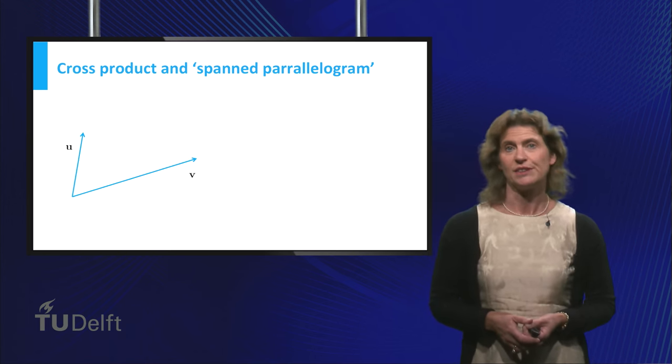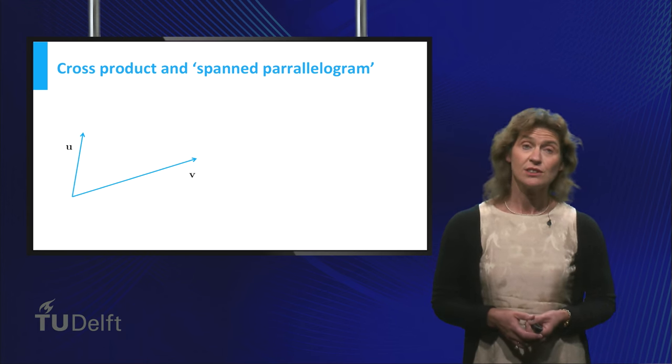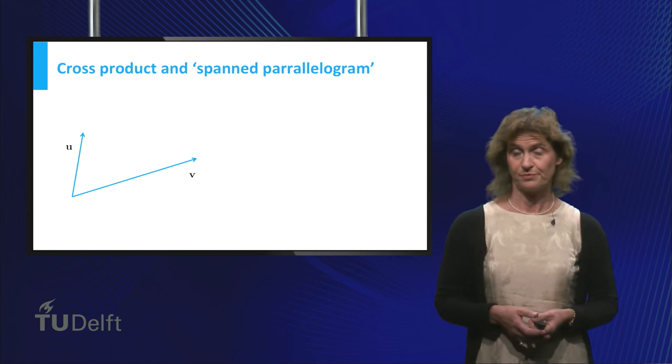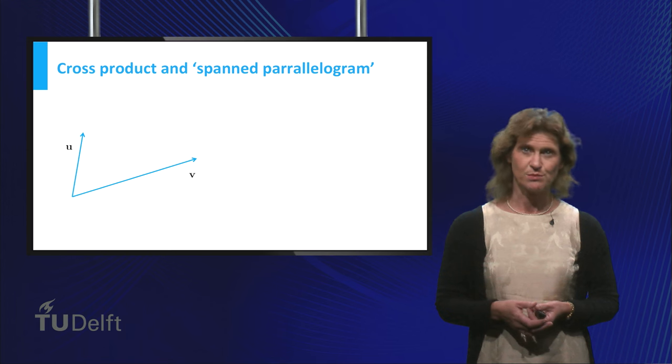Given two vectors u and v in three-dimensional space, you know how to find the direction of the cross product using the right-hand rule. The length of the cross product may seem somewhat mysterious still.